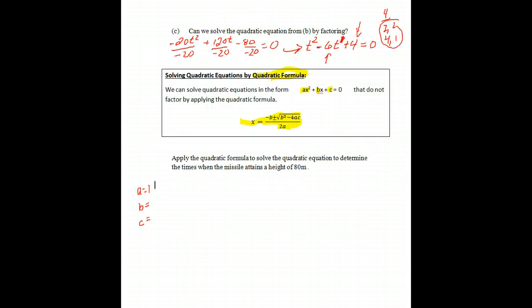So from the equation above, the a value is 1, b value is negative 6, and c value is 4. And remember folks, we don't include the variable with the a, b, and c. It's just the values.